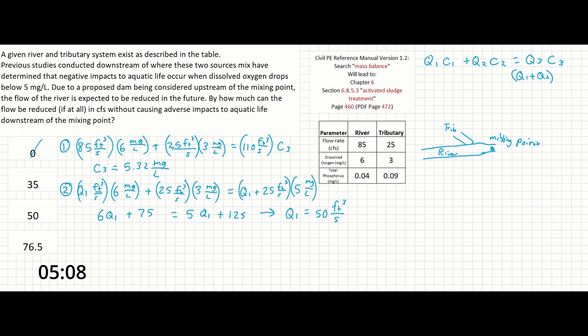Finally, the question is phrased by how much can the flow be reduced? We simply need to subtract the new flow from the old flow to find the difference. Step 3 is very simple, it's going to be Q1 old minus Q1 new.